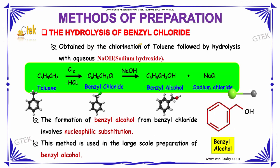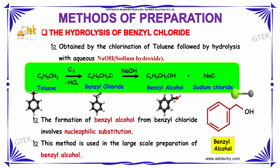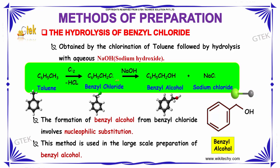The hydrolysis of benzyl chloride: this is obtained by the chlorination of toluene followed by hydrolysis with aqueous NaOH. Toluene (C6H5CH3) on chlorination removes the HCl group, forming benzyl chloride. On addition of aqueous sodium hydroxide, we obtain benzyl alcohol (C6H5CH2OH) and sodium chloride as a side product.